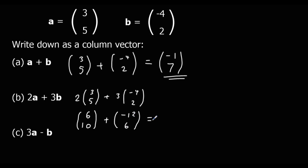Now we add these together. We're going to the right six and then to the left twelve, so six minus twelve is minus six. And we're going up ten and up six, which is up sixteen. So 2a + 3b equals the column vector minus six, sixteen.